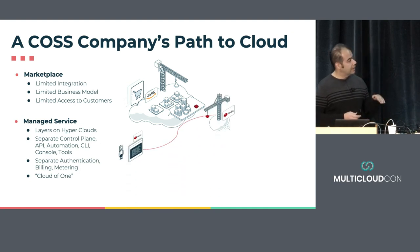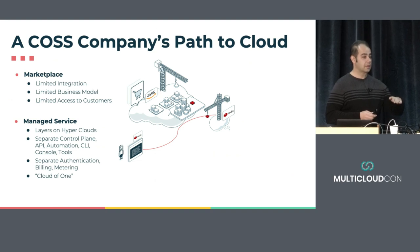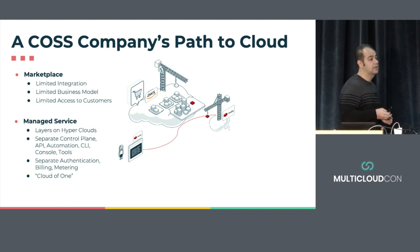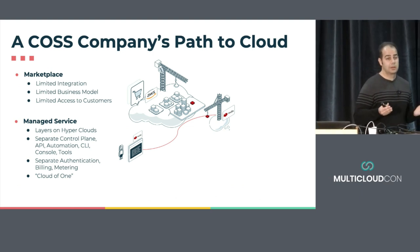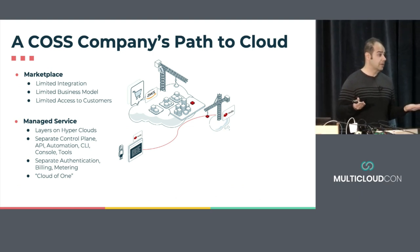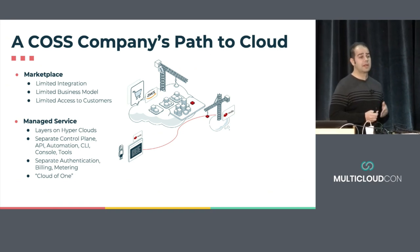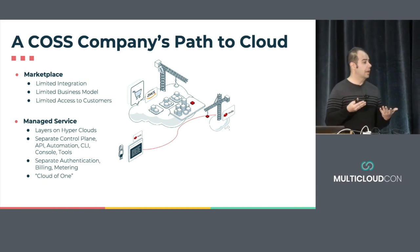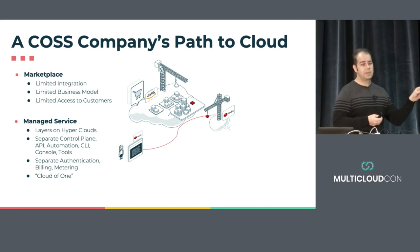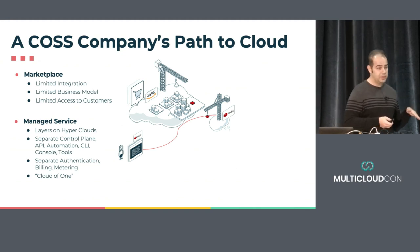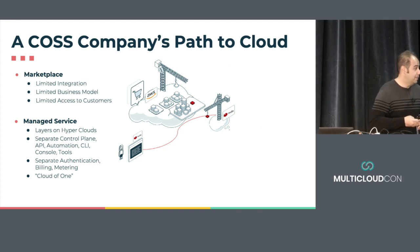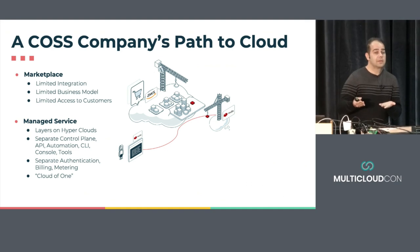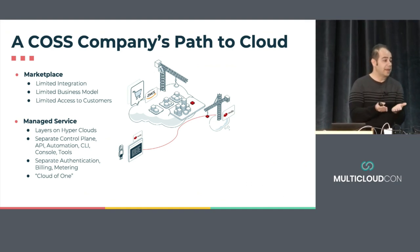They have a limited business model — basically stuck to some markup on top of hosting fees. And they have limited access and visibility into what their customers are actually doing on the cloud. If they wanted to go beyond that, the next step up is to actually build their own managed service. And that's a big step, because what they have to do is build essentially a cloud of one managed service. They typically layer on top of hyperclouds — you'll see things like Redis Cloud, Cockroach Cloud, or YugaByte Cloud, all offering their own cloud offerings that run on AWS, GCP, and Azure. But they have their own control plane, their own API, their own automation, their own CLI. It's a completely independent cloud with a really great best-of-breed offering.